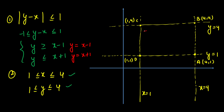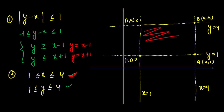This square will be our sample space, because any point in it — say (1, 1.5) — satisfies the constraint that A leaves between 1 and 4 and B leaves between 1 and 4. Since there are infinitely many points, we will not count them individually — we will use area. This whole square is our sample space.